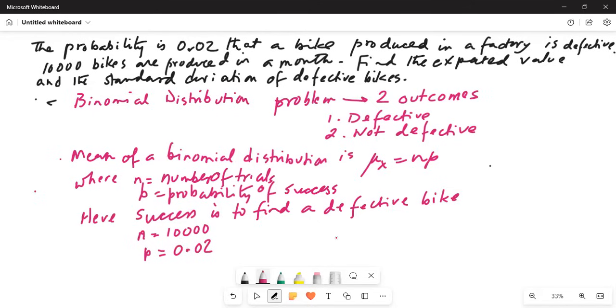μ_x is n times p is 10,000 times 0.02. So that is equal to 200.